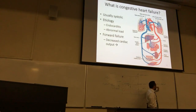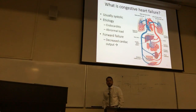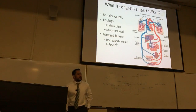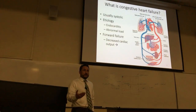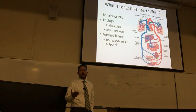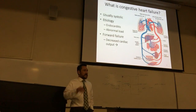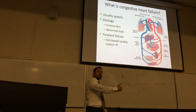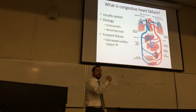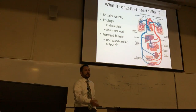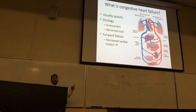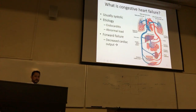The etiology comes from either two sources: endocarditis, which is an inflammatory disease of the inner layer of the heart — the endocardium — or more commonly today we see it with abnormal loads. The number one culprit of an abnormal load in Western society is elevated blood pressure. That's why we're so paranoid about patients' blood pressure.